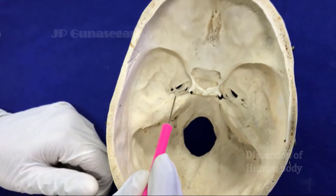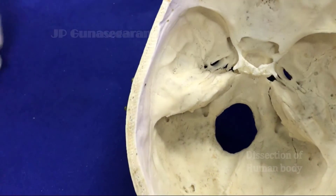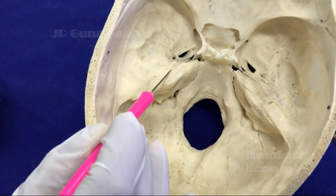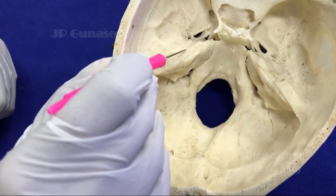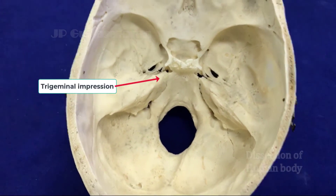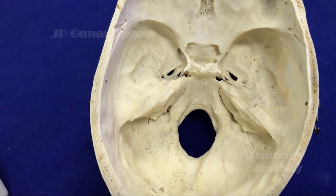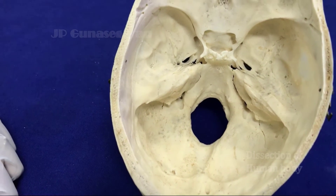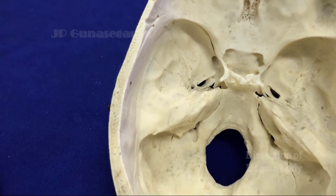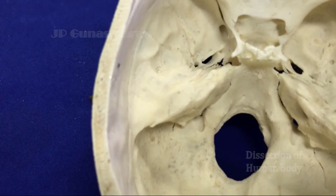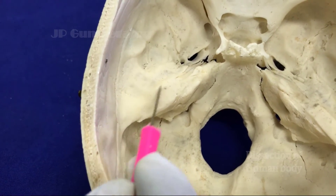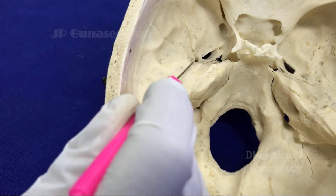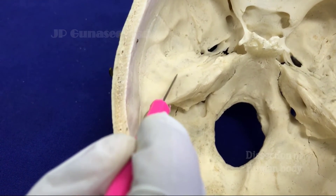Let us see the features on the anterior sloping surface of the petrous part of the temporal bone. Behind and lateral to the foramen lacerum is a depression called the trigeminal impression, which lodges the sensory ganglion of the trigeminal nerve, also called the Gasserian ganglion. Lateral to this is an elevation called the arcuate eminence, created by the superior semicircular canals. Still lateral, the sloping surface of thin plate of bone is called the tegmen tympani, which forms a continuous roof for the canal for tensor tympani, middle ear cavity, and mastoid antrum.